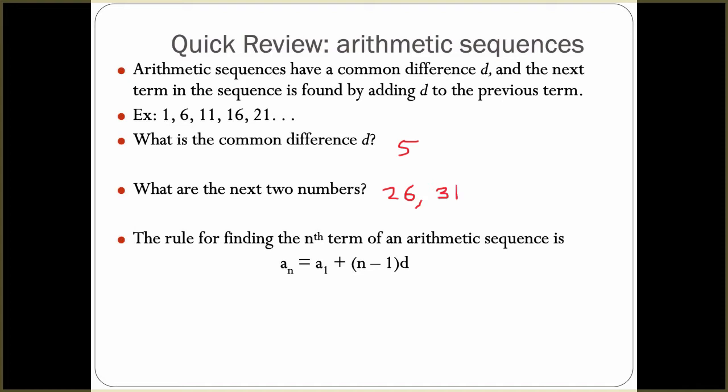The rule for finding the nth term of an arithmetic sequence is a_n = a_1 + (n - 1)d. Remember that a_1 is the first term in the sequence. So the formula would be a_n = 1 + (n - 1)5. From here I can plug in and find any number in the sequence. This is what we did previously.